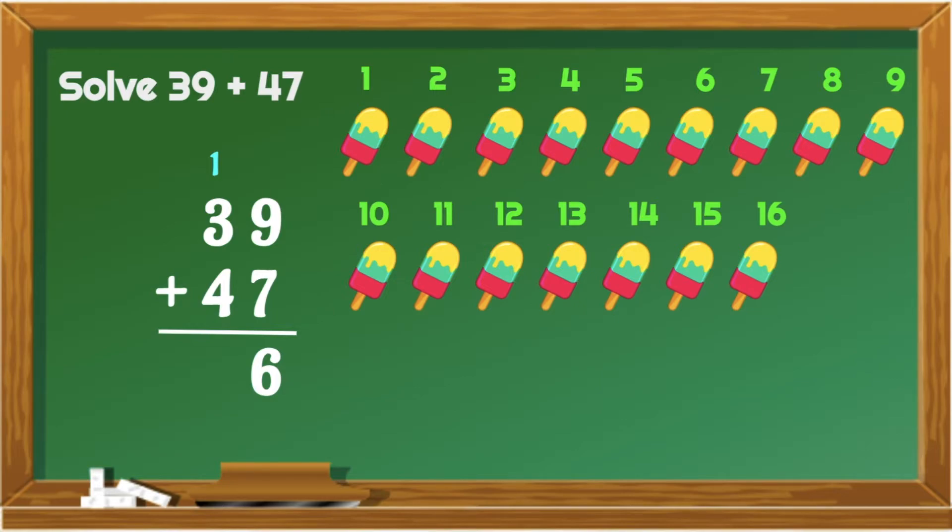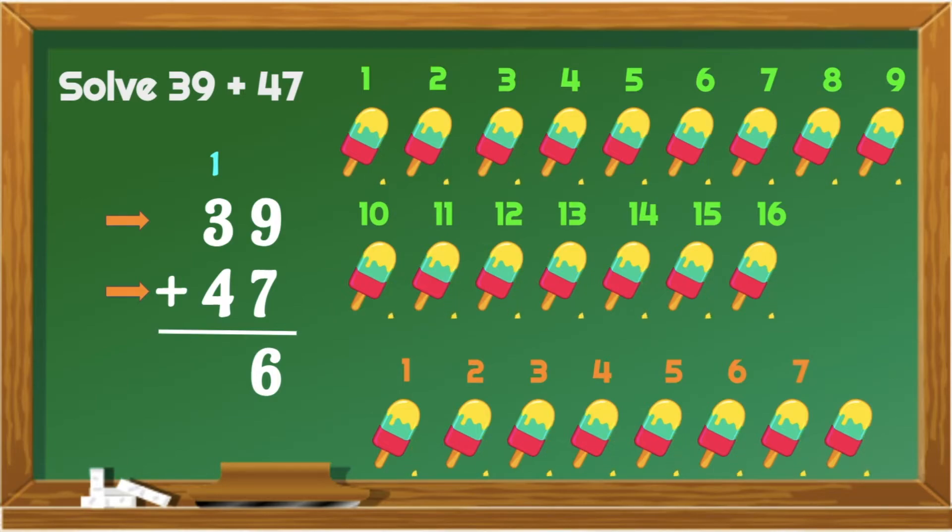And then, let's proceed with the tens place. 1 plus 3 plus 4. So, from 1, let's count on. 2, 3, 4. Let's add 4 more. 5, 6, 7, 8. Good job! 39 plus 47 is equal to 86.